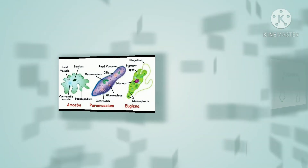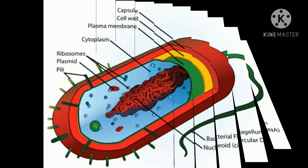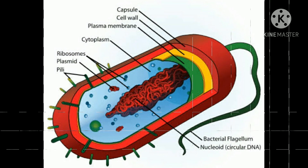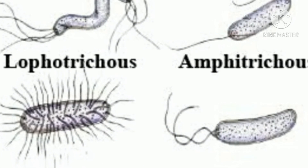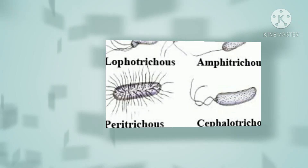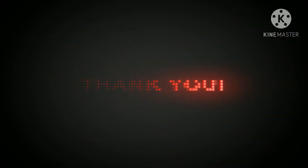Locomotion. Eukaryotic cells possess a variety of complex locomotor mechanisms, whereas those of prokaryotes are relatively simple. I am concluding this video here. See you soon in my next video. Thank you friends.